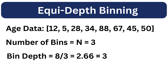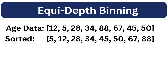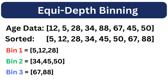Now let's discuss equi-depth binning with the same example data. In equi-depth binning, we calculate the depth of each bin by dividing the total number of elements, giving us a value of roughly 3, so each bin should contain approximately 3 instances. Since the number of values is even, one bin will have fewer values. First we sort the data, then we place the elements into each bin in groups of 3: the first 3 elements go to bin 1, the next 3 go to bin 2, and the remaining 2 go to bin 3.